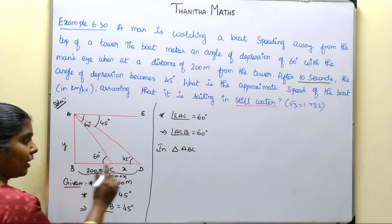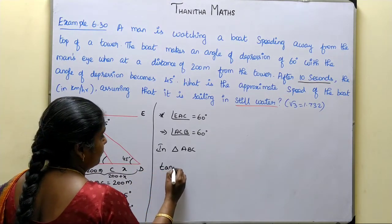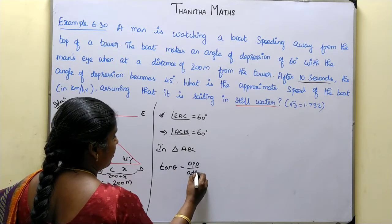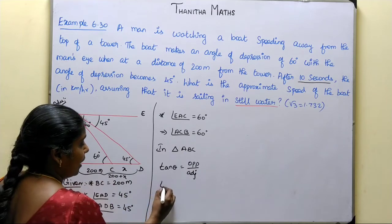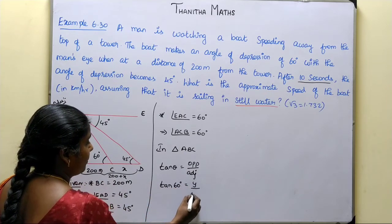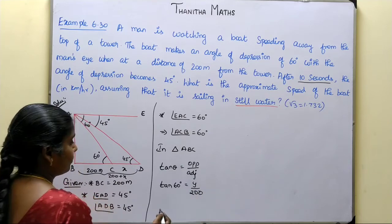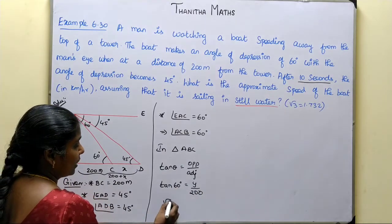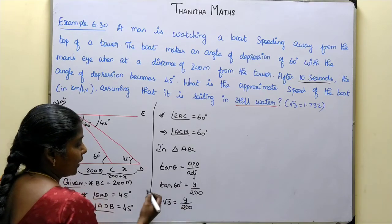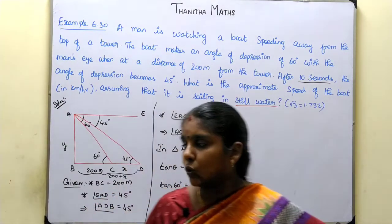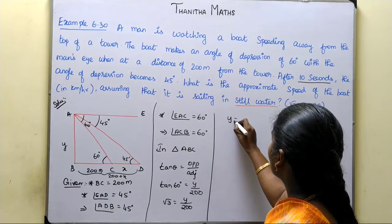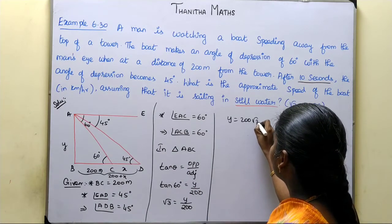Since we have opposite and adjacent sides, we use the formula tan theta equals opposite side divided by adjacent side. For theta equals 60 degrees: tan 60 equals y divided by 200. Since tan 60 equals root 3, we get root 3 equals y divided by 200, so y equals 200 root 3.